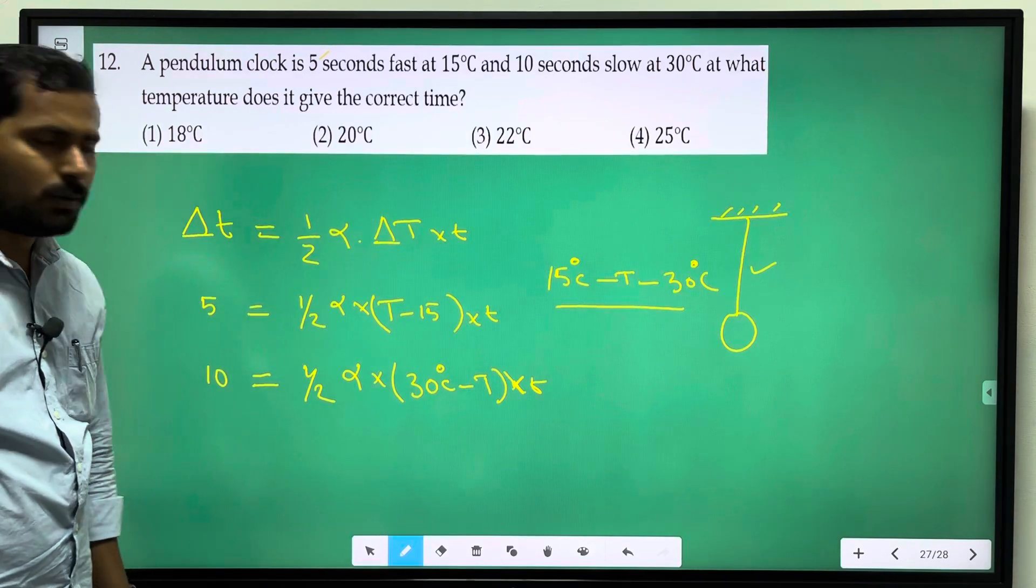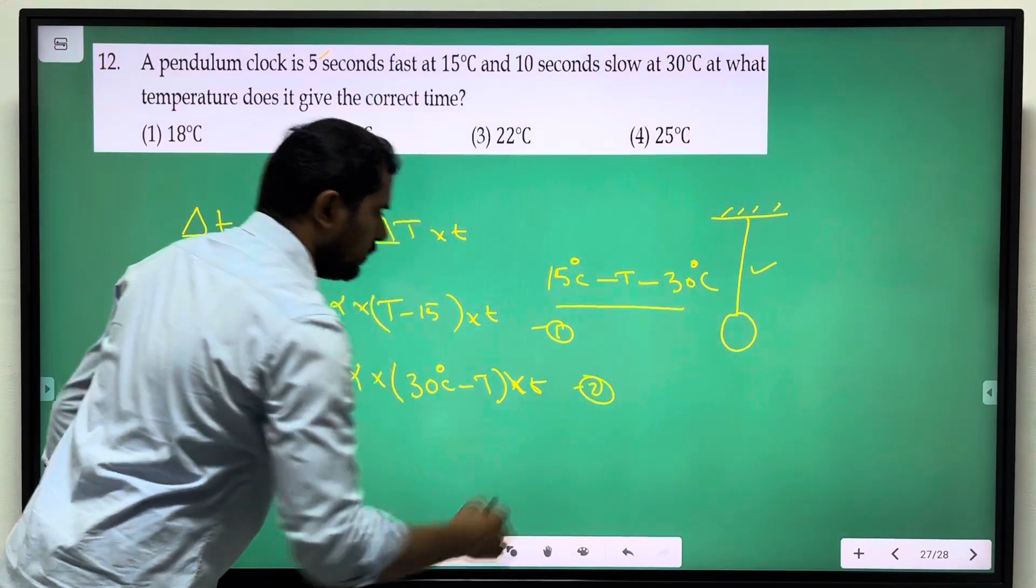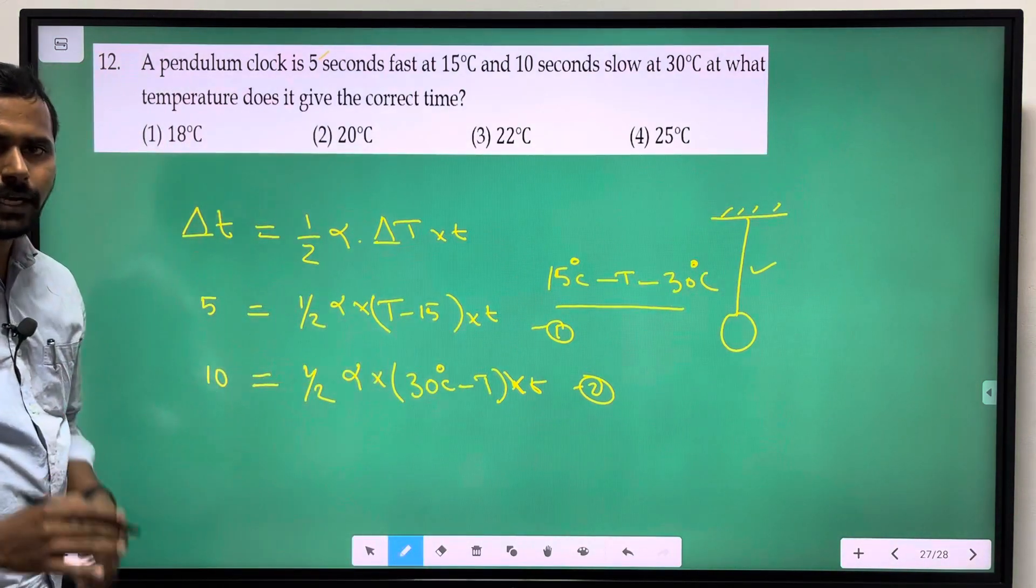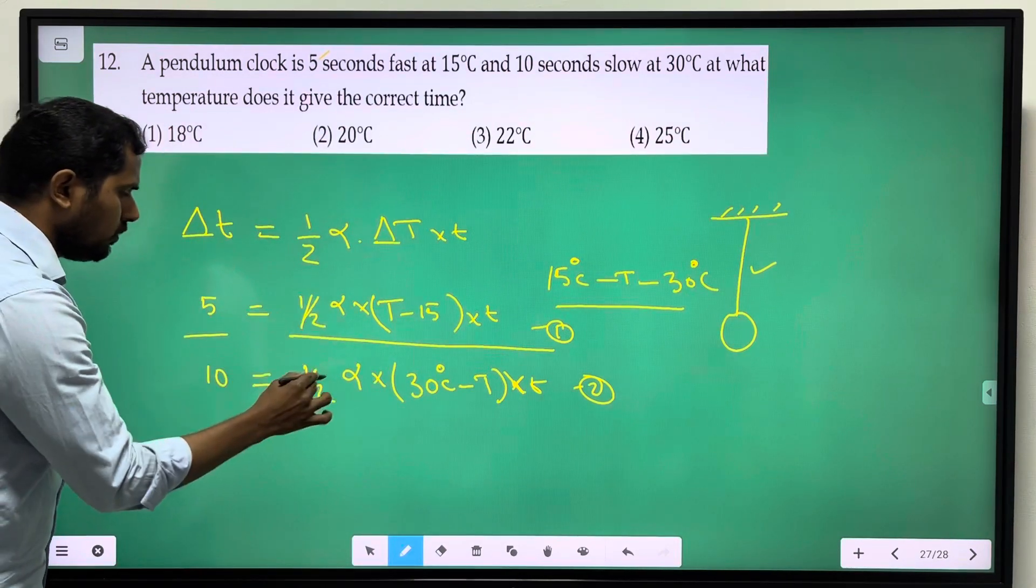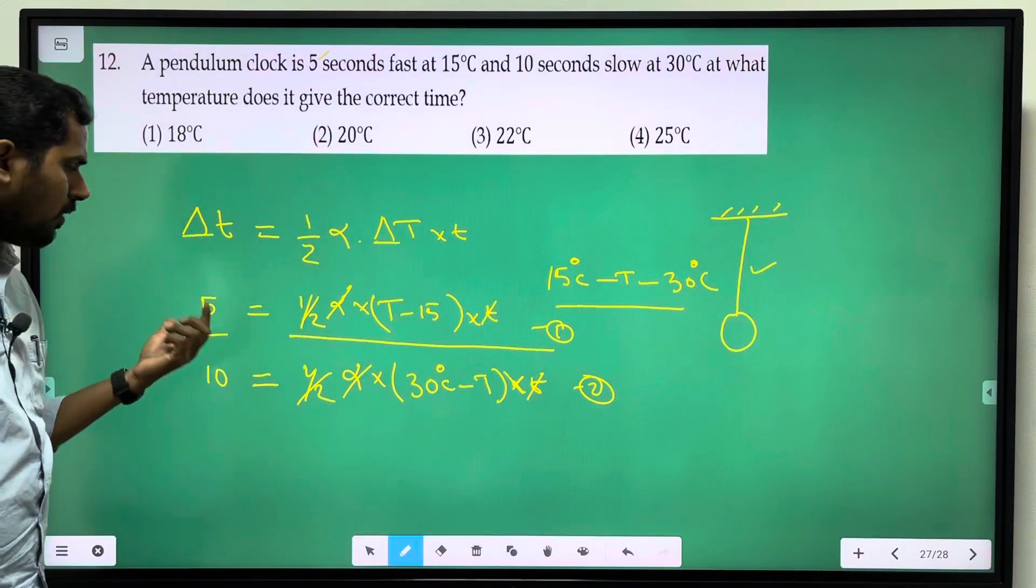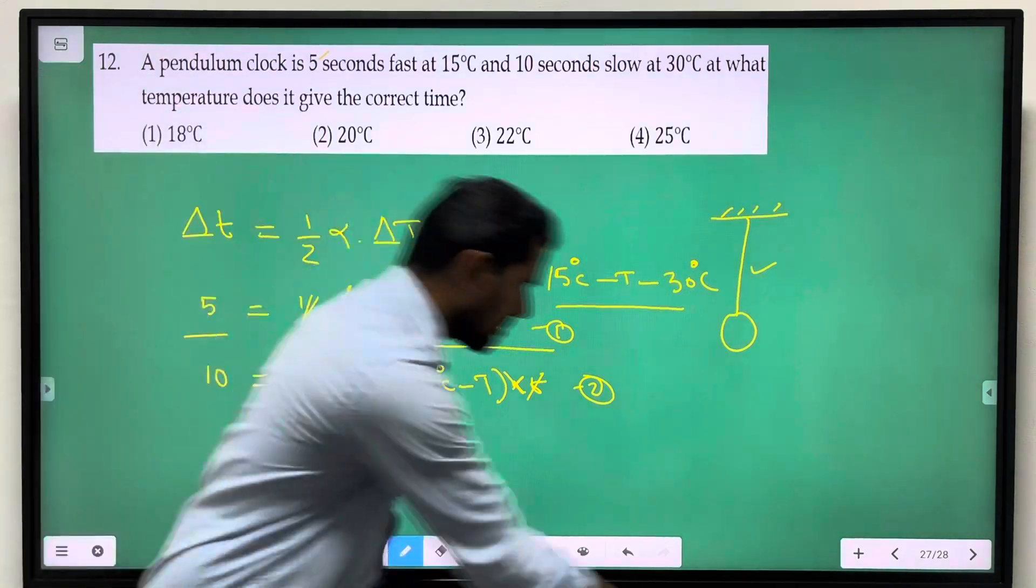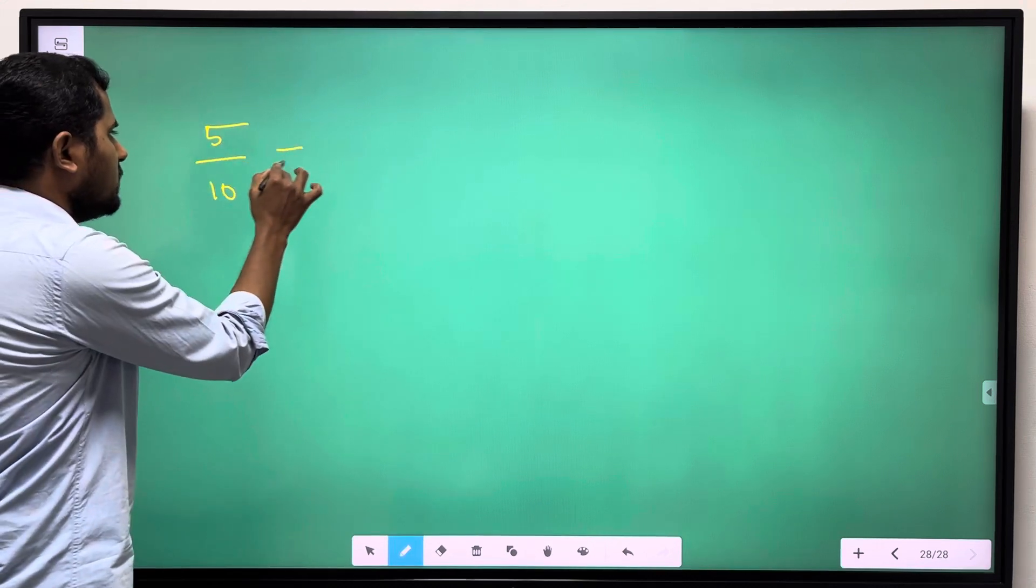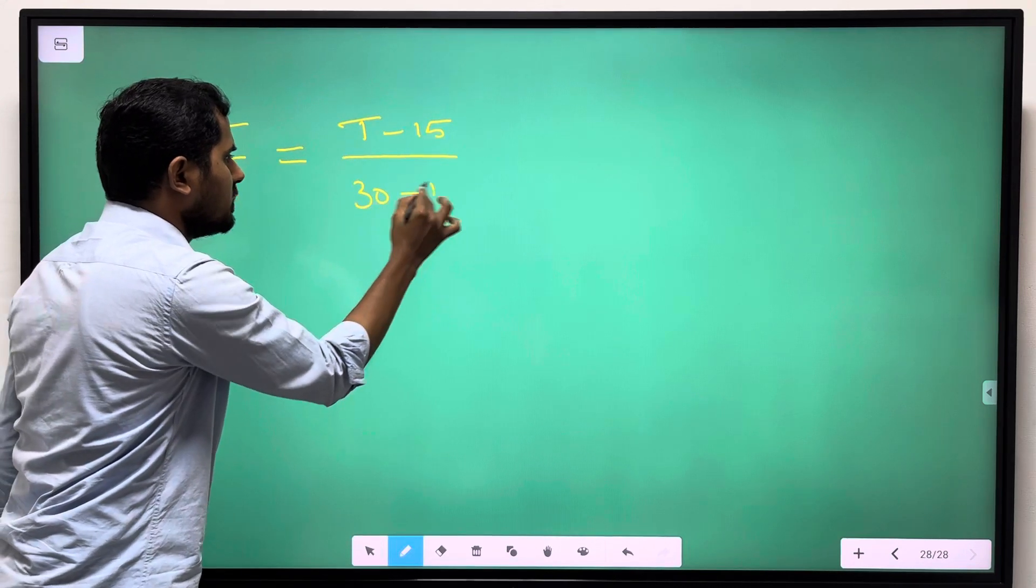Resolve the equations. Take this as equation number 1 and 2. Now 1 divided by 2. Alpha cancel, time t cancel. So we have 5 by 10 equals t minus 15 divided by 30 minus t.